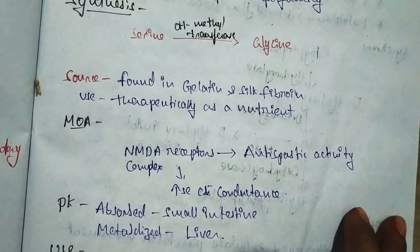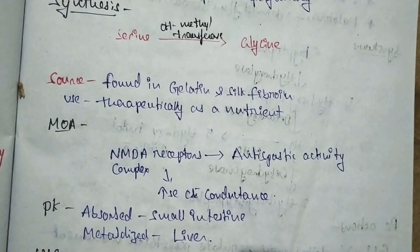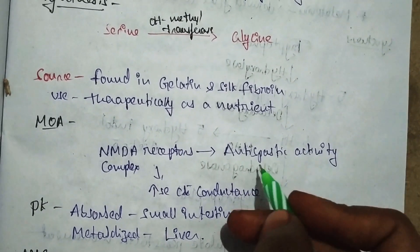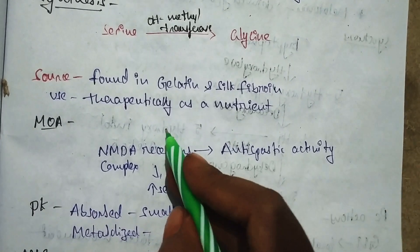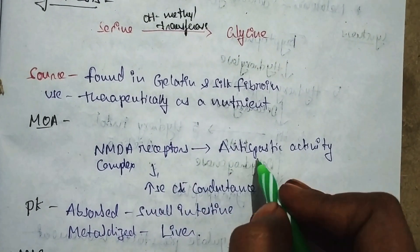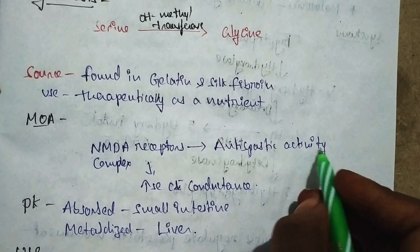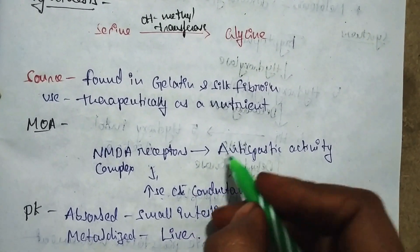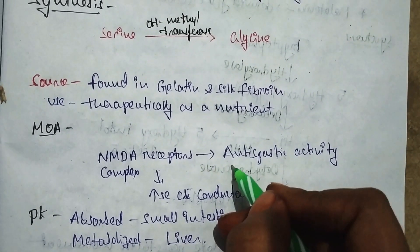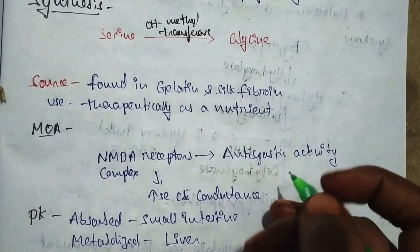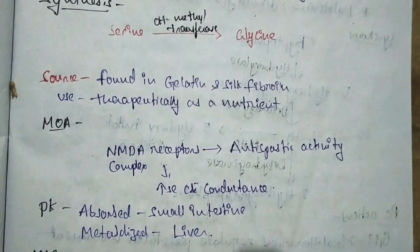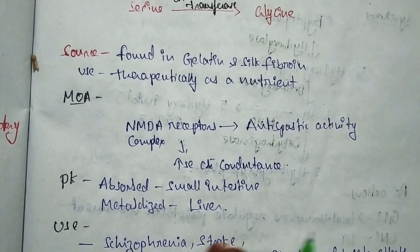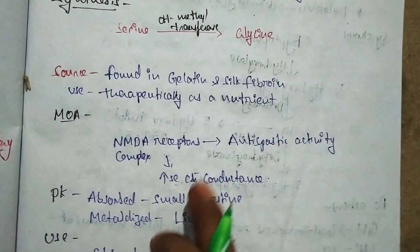The mechanism of action involves glycinergic receptors present on the NMDA receptor complex, which show anti-spastic activity by increasing chloride conductance. When chloride channel conductance increases, anti-spastic activity is reduced, meaning muscle contraction is reduced. Pharmacokinetically, glycine is absorbed in the small intestines and metabolized by the liver.